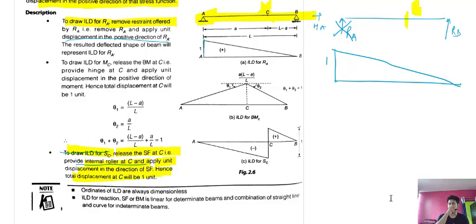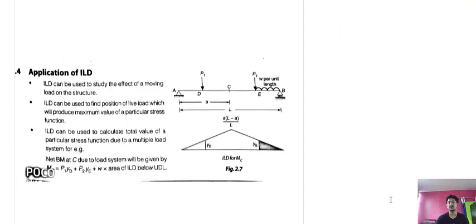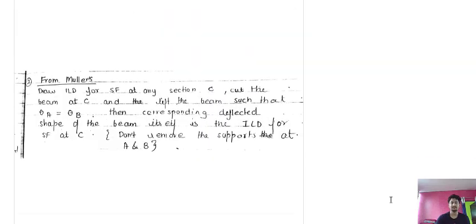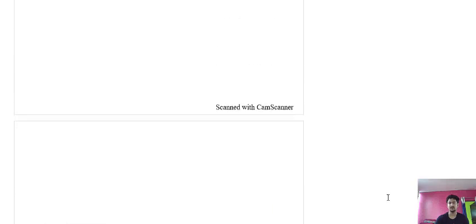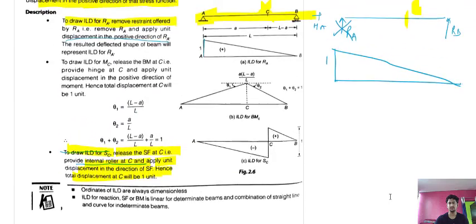In simple words, to draw the ILD for shear force at section C: cut the beam at C and lift the beam such that theta_a and theta_b are equal. The corresponding deflected shape of the beam is the ILD for shear force. Do not remove the supports at A and B.